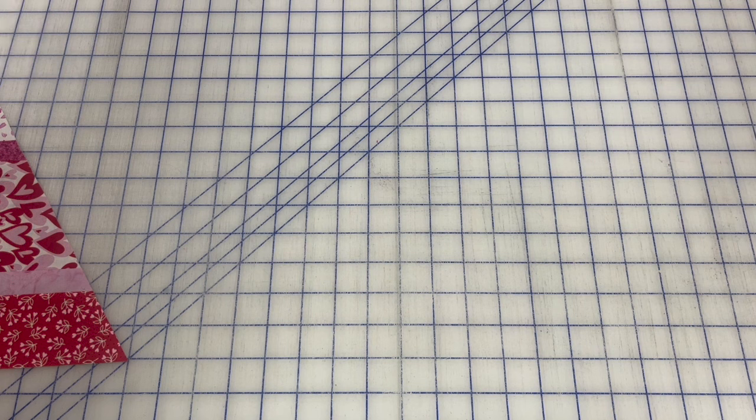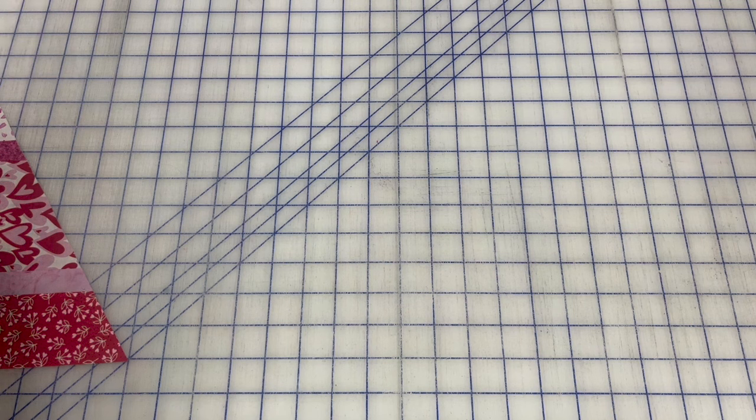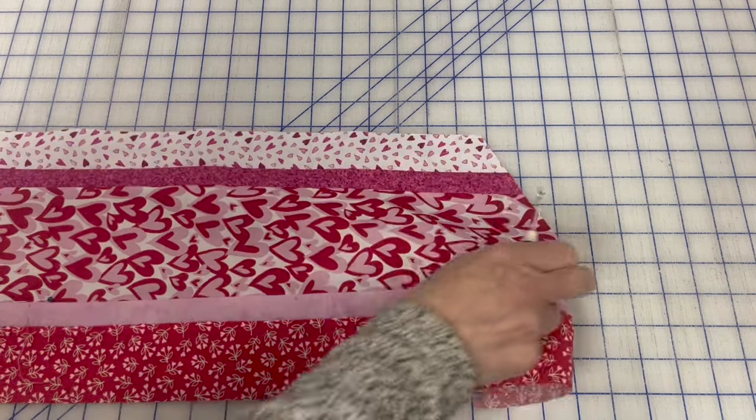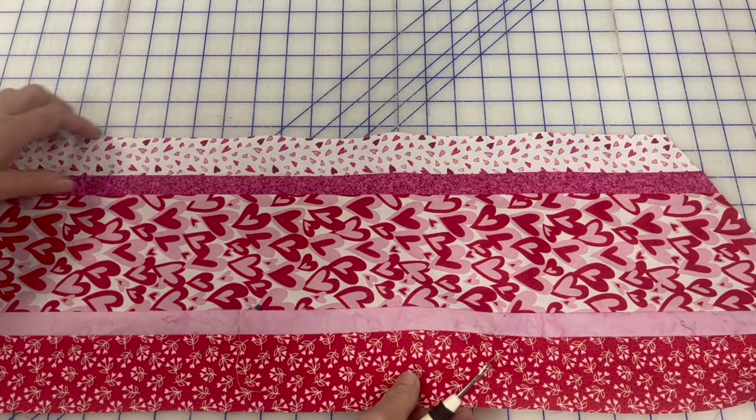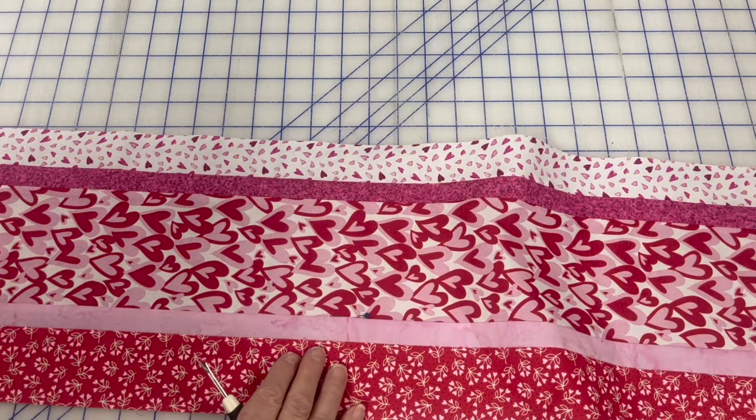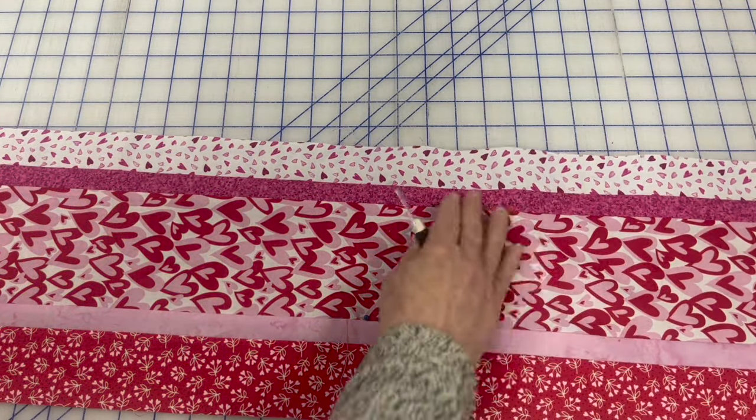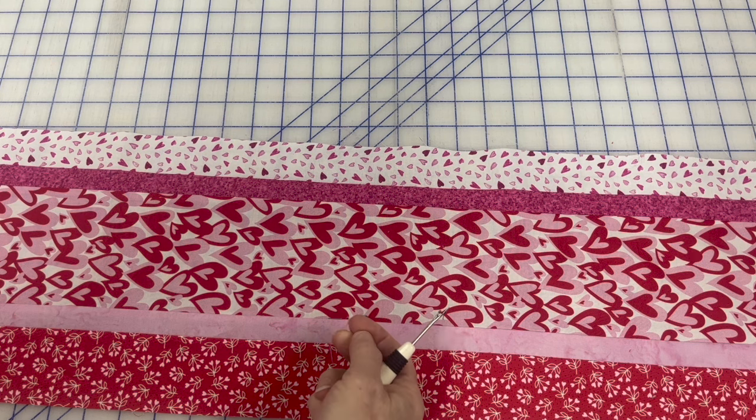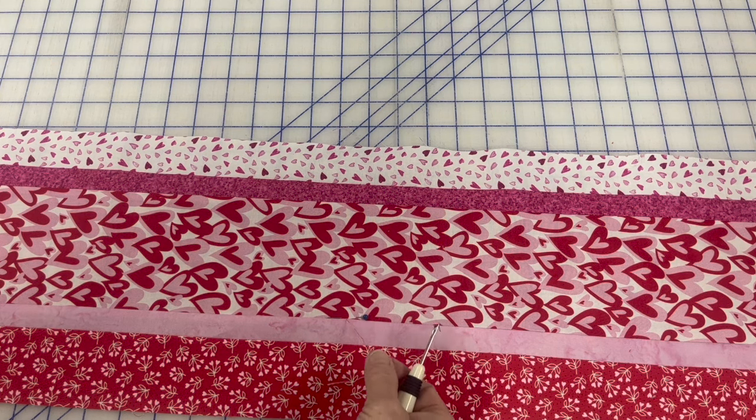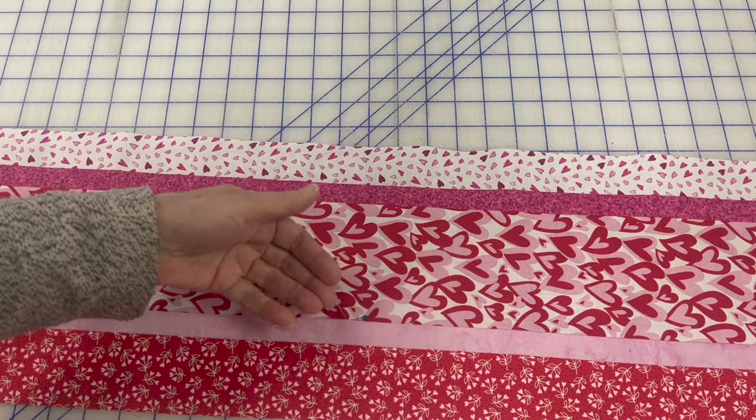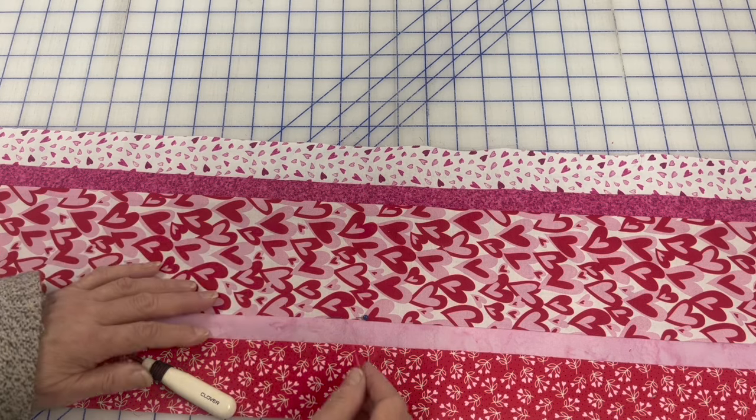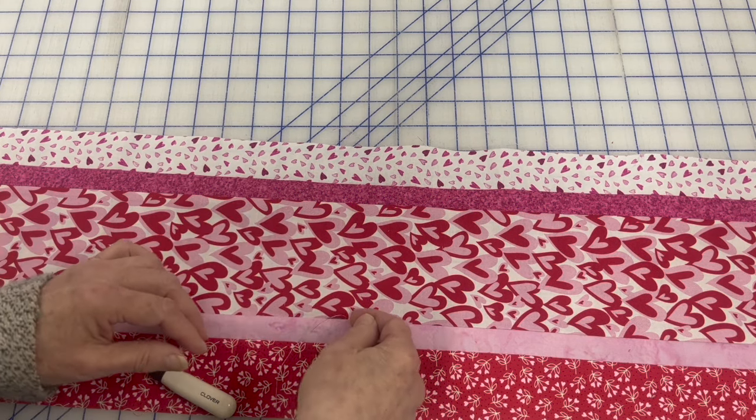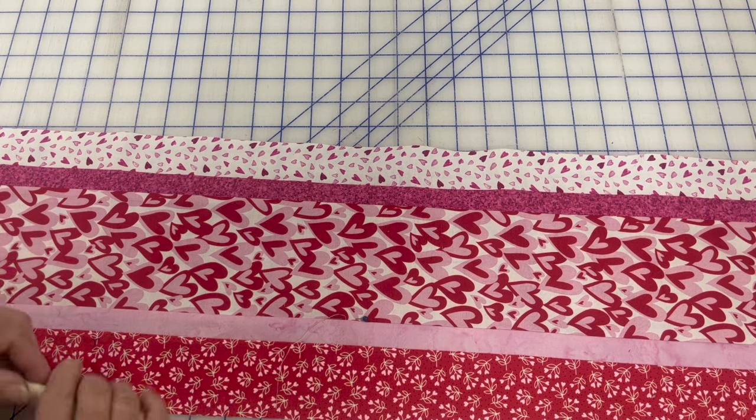The last thing I want to show you today is grooming your quilt. I can't tell you how many quilts I have on the long arm that have just threads and threads and threads on the back and threads sticking out all through the front. When I'm pressing my pieces and I see threads, I get rid of them right then and there. I don't want to be finishing this table runner and having this thread hanging here. Sometimes you will pull it and it doesn't come out. You could go ahead and clip it, but then it's still there in that seam.